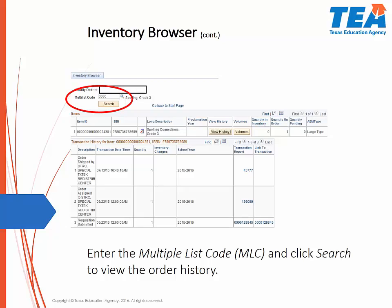This report goes through the order history. This particular order for 3rd Grade Spelling Connections in large print was submitted on June 23, 2015. The STRC received the order on the same day and shipped the order on July 13, 2015.